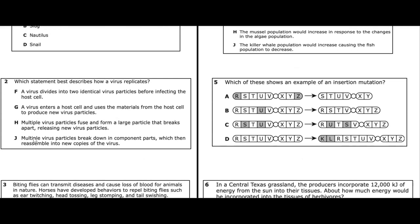Question two: which statement best describes how a virus replicates? F — a virus divides into two identical virus particles before infecting the host cell. G — a virus enters a host cell and uses material from the host cell to produce new virus particles. H — multiple virus particles fuse and form a large particle that breaks apart. J — multiple virus particles break down into component parts which then reassemble. The answer is G because all viruses need a host cell in order to reproduce.